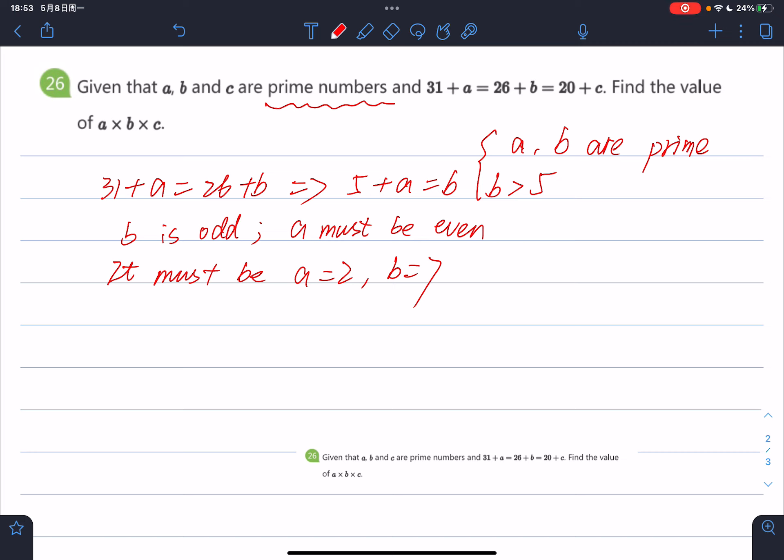You can find out because 26 + b equals 20 + c, therefore 33 = 20 + c. So c equals 13.